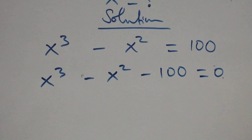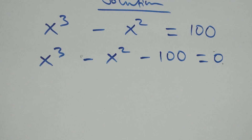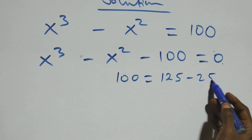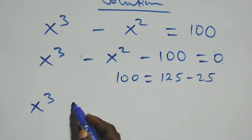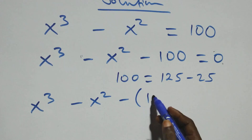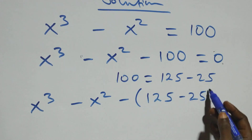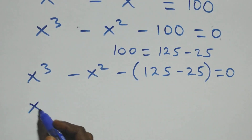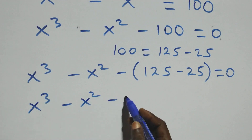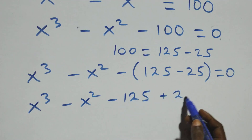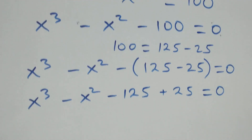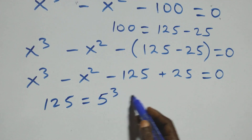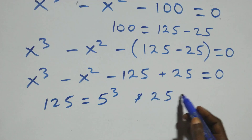Next, we can express 150 as 125 plus 25. This equation becomes x cubed minus x squared minus (125 plus 25) equals zero. Opening the bracket gives x cubed minus x squared minus 125 plus 25 equals zero. We can also express 125 as 5 times 5 times 5, that's 5 cubed, and 25 as 5 times 5, that's 5 squared.